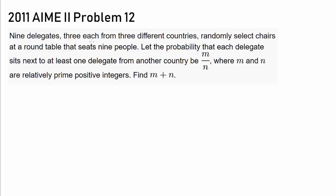9 delegates, 3 each from 3 different countries, randomly select chairs at a round table that seats 9 people. Let the probability that each delegate sits next to at least 1 delegate from another country be M over N, where M and N are relatively prime positive integers.